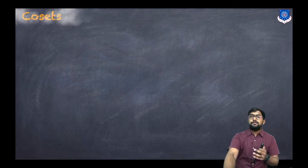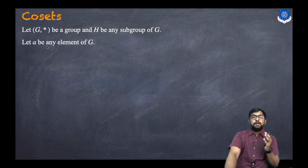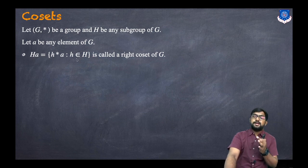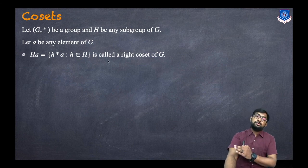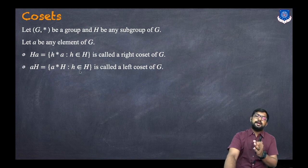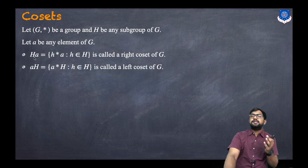First, let us discuss what is a coset. Let G be a group and H be any subgroup of G. Let 'a' be any element of G. The notation Ha is defined as the set of all h*a such that h belongs to H — this is called the right coset of H. Similarly, aH equals the set of all a*h such that h belongs to H — this is called the left coset of G.